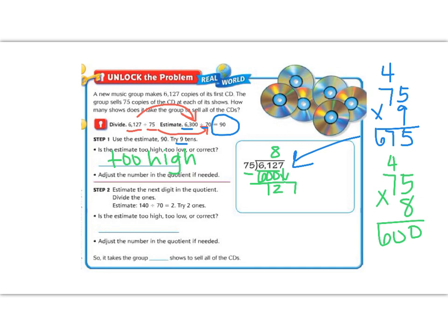So it says now we're going to round again, 140 instead of 127, and we're still going to stick with the 70 just to get us a close number. 7 goes into 14 two times, so we're going to try two 1s. So now let's multiply to see how close that gets us. So we're multiplying 75 times 2 because that was our estimate. So 2 times 5 is 10, and 2 times 7 is 14 plus 1 is 15. And we were trying to go to 127, and we got to 150. So that's too much. So our estimate is too high.